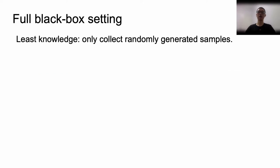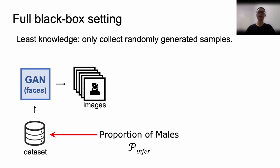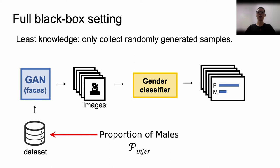Here, we further show our full black box attack format. In this setting, we can only collect generated samples randomly. We show the method to infer the proportion of males in the training dataset. Firstly, we collect a number of images from the target GAN. Secondly, we use a gender classifier to analyze each face, to find the possibility of each face being male. Generally, we can simply calculate the average score of the classifier output and use that average score as the inference result.